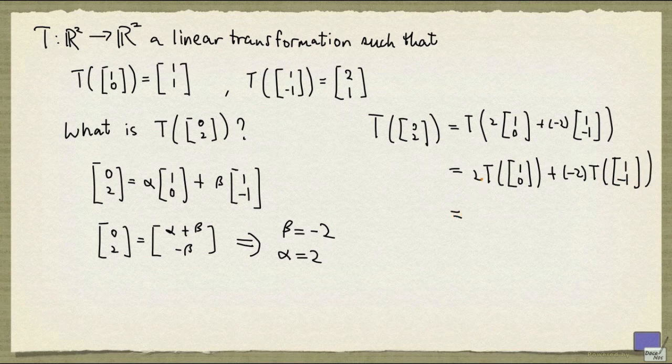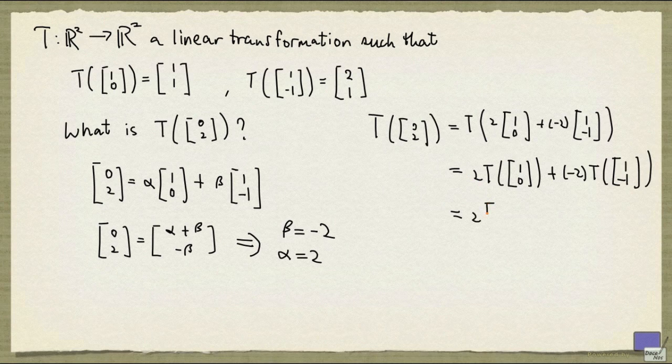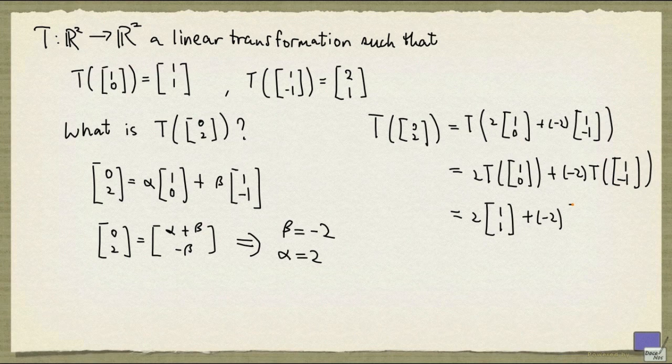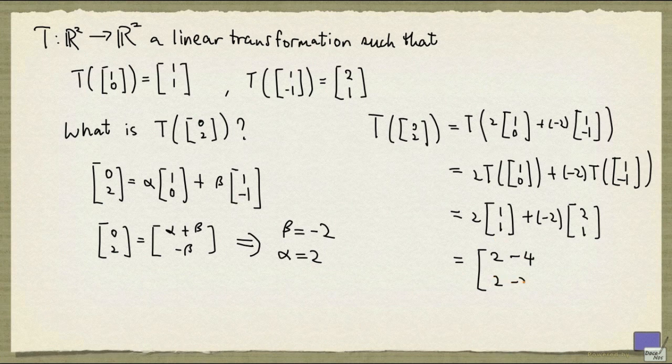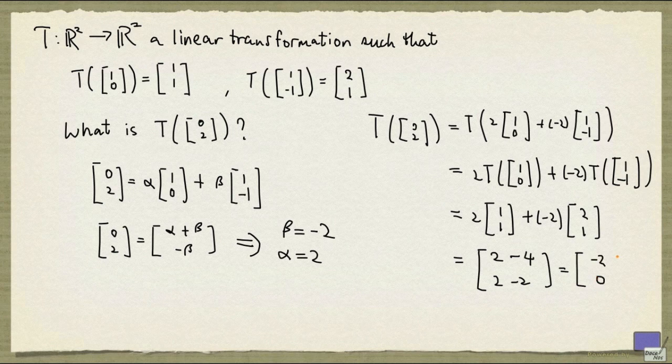And we know that T([1,0]) is [1,1], so this is just 2·[1,1]. And T([1,-1]) is [2,1], so this is just [2,1]. And therefore we have [2,-4] in the first entry and [2,-2] in the second entry, giving us [-2,0].